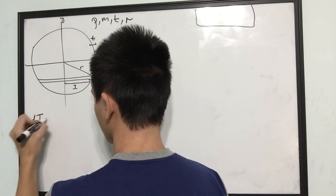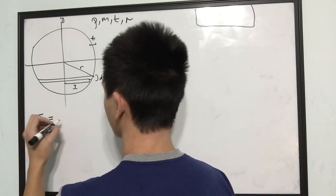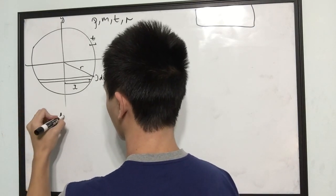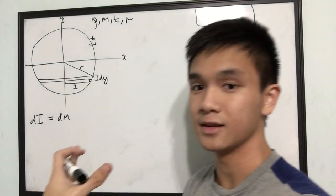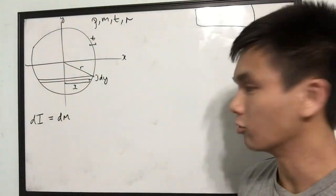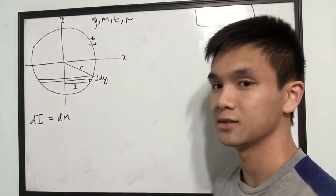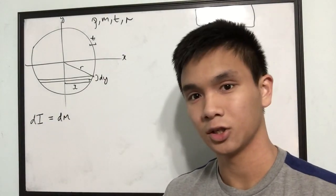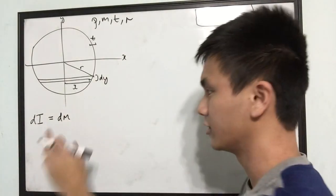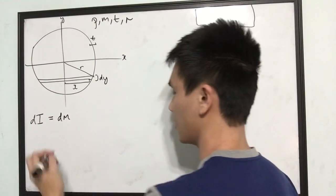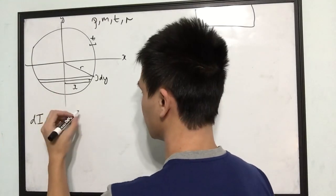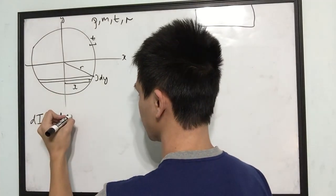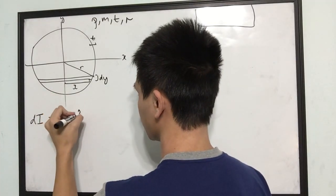So, dI is equal to — for a hoop, the moment of inertia is mr², but it's a differential region, so it's dm times r². The radius here is x, so it's dm times x².